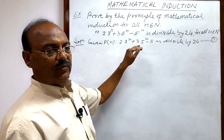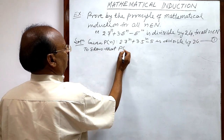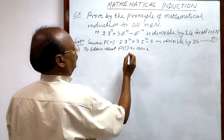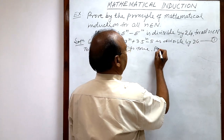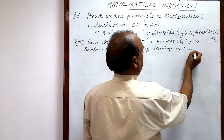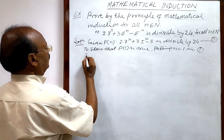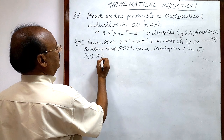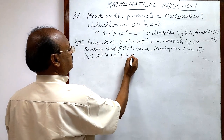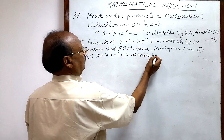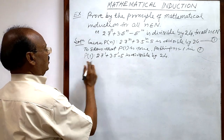First step: we will show that this statement is true for n = 1, meaning we have to show that P(1) is true. Putting n = 1 in relation number 1, we get P(1) = 2·7¹ + 3·5¹ - 5 is divisible by 24. We have to prove it.